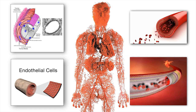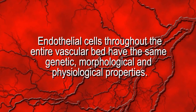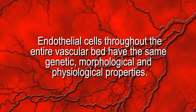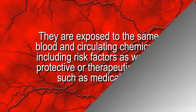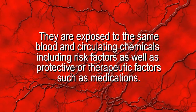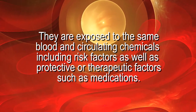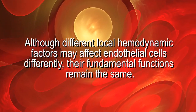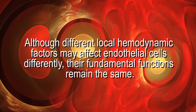All these vessels are paved with endothelial cells, which are the most important cells in our cardiovascular system. Endothelial cells throughout the entire vascular bed have the same genetic, morphological, and physiological properties. They are exposed to the same blood and circulating chemicals, including risk factors as well as protective or therapeutic factors such as medications. Although different local hemodynamic factors may affect endothelial cells differently, their fundamental functions remain the same.